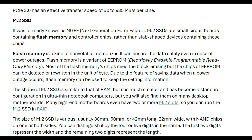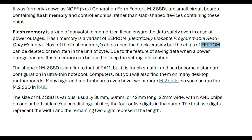Flash memory is a variant of EEPROM — Electronically Erasable Programmable Read-Only Memory. Most flash memory chips need to be block-erased, but EEPROM chips can be deleted or rewritten at the byte level. Due to its ability to save data during power outages, flash memory can be used to keep settings information.